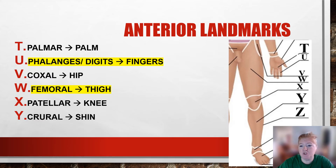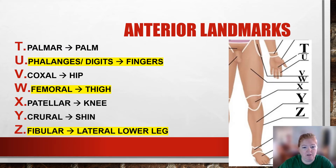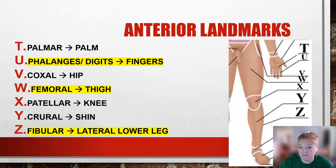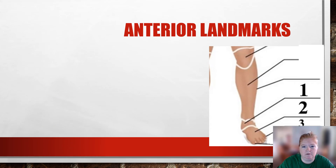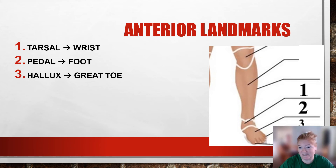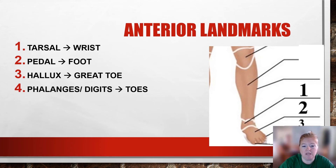Crural — like it is so cruel to kick someone in the shin — crural is your shin. Fibular refers to the fibula, which is one of two bones in your lower leg. The tibia is the bigger bone, and the fibula is lateral, so the fibular region is on the lateral side. We have tarsal for the ankle, pedal for your foot, hallux for your great toe — remember pollux is thumb, hallux is great toe — and phalanges or digits are also used for toes.